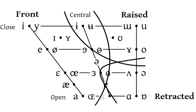A vowel is one of the two principal classes of speech sound, the other being a consonant. Vowels vary in quality, in loudness, and also in quantity. They are usually voiced and are closely involved in prosodic variation such as tone, intonation, and stress.